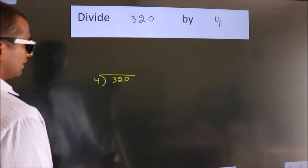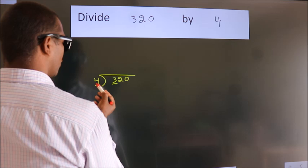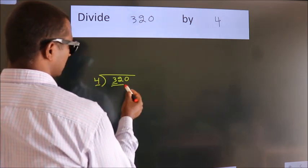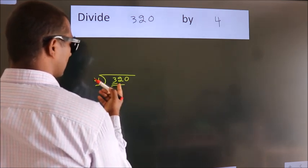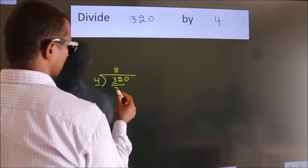Next, here we have 3. Here 4. 3 is smaller than 4, so we should take 2 numbers: 32. When do we get 32 in the 4 table? 4 times 8 equals 32.